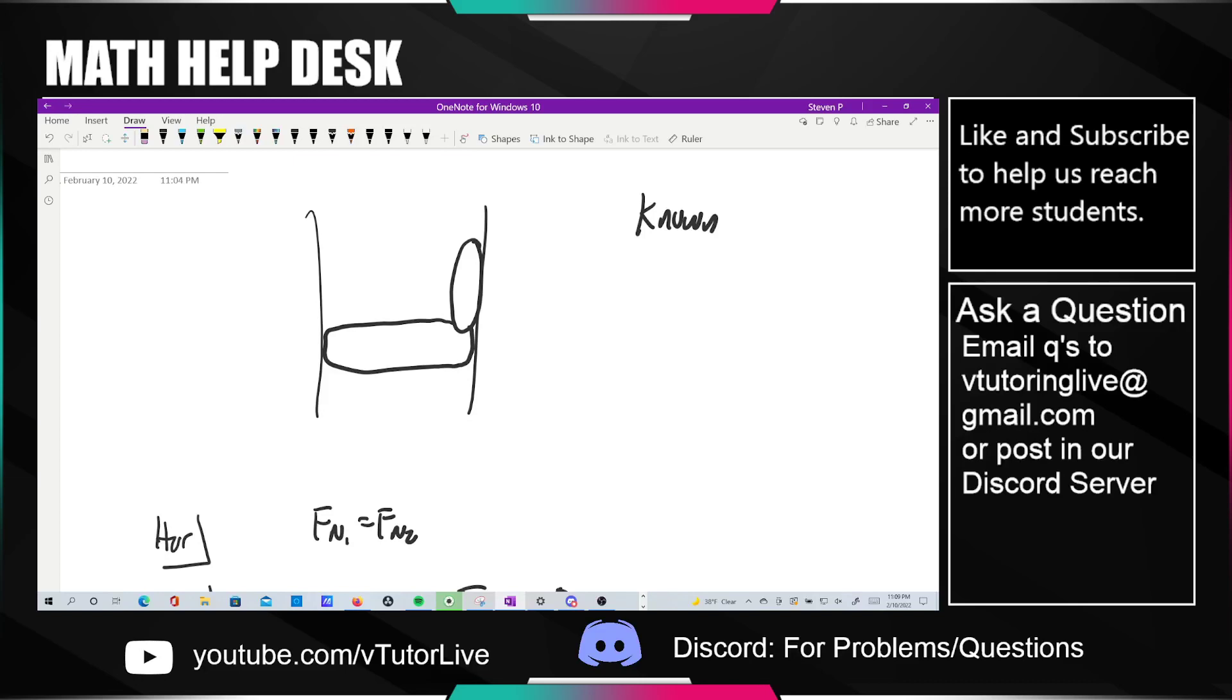A student shared with me a problem about a rock climber in a chimney, sort of wedging themselves up between two slabs of rock. The idea is that the feet have a force of friction with a coefficient of friction, let's call that mu1, and the back also has another coefficient of friction, let's call that mu2.